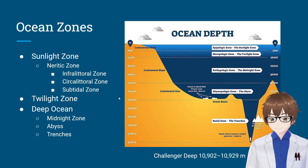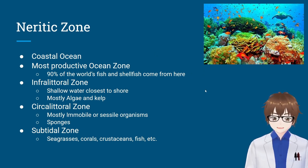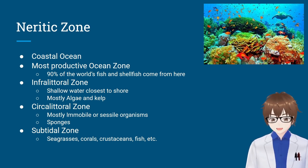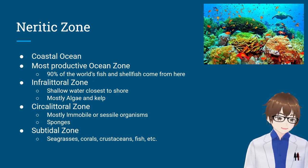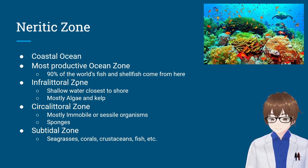First, the neritic zone — the coastal oceans. Whenever you're swimming on a beach, you are technically in the neritic zone. This is the most productive ocean zone. 90% of the world's fish and shellfish come from here, so whenever you think of eating shrimp or any fish, it probably came from this zone. I have a picture here showing coral and turtles. The infralittoral zone is the shallow water closest to the shore, mostly algae, smaller crustaceans, and possibly smaller fish.